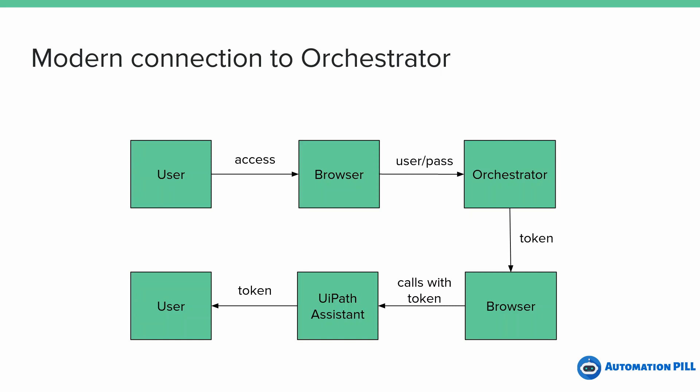The UiPath Assistant then communicates using that token with the Orchestrator. There is an agreement, and based on this token it authenticates the user. This is how the modern connection works.